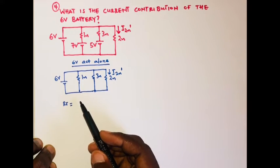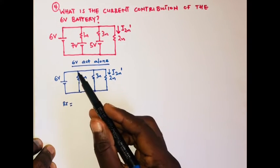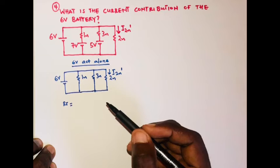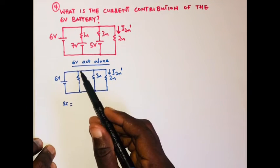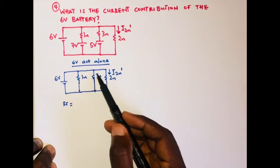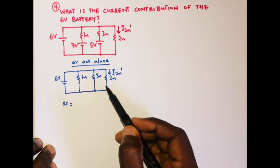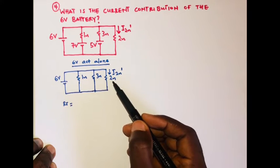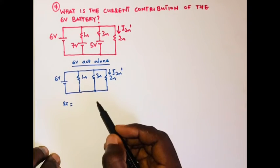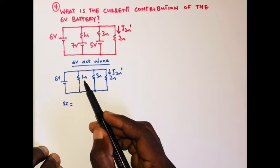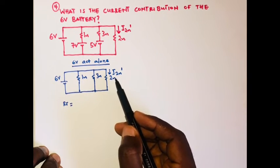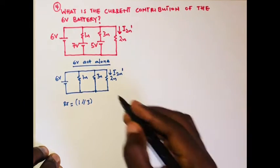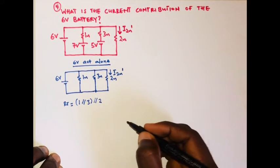These resistors are in parallel because whenever you take a loop you can go through that loop without passing through any other circuit elements except those two resistors. Taking this loop we have only the one ohm and three ohm; taking the big loop we have one ohm and two ohm; and the other loop has three ohm and two ohm. So they are all connected in parallel. First let's combine the one and three, and then add the two to it — giving us one parallel three parallel two as the total resistance.